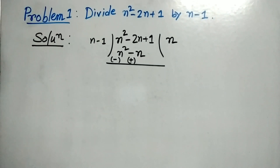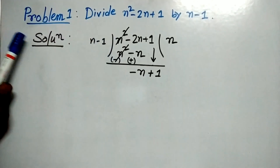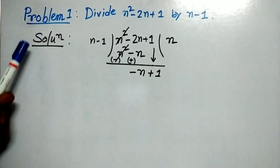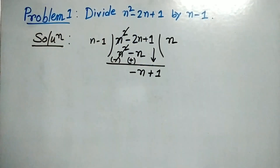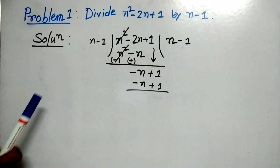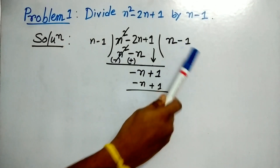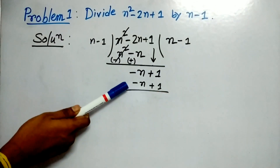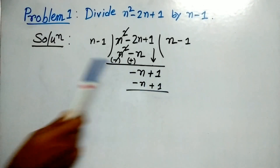We place the result just below the like term and subtract. n squared and n squared will get cancelled; minus 2n plus n is minus n, and 1 will come down. Next we have to find minus n — if we multiply n minus 1 by minus 1, we get minus n first, and then minus 1 times minus 1 is plus 1.